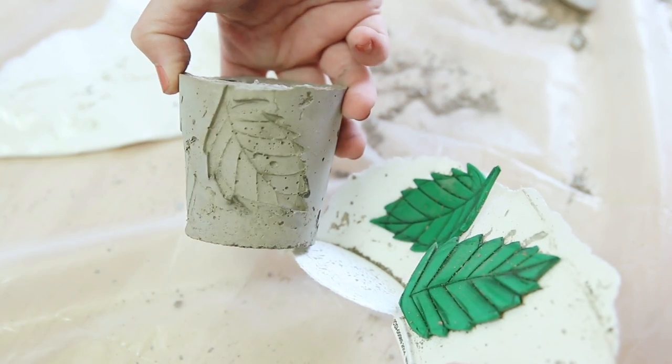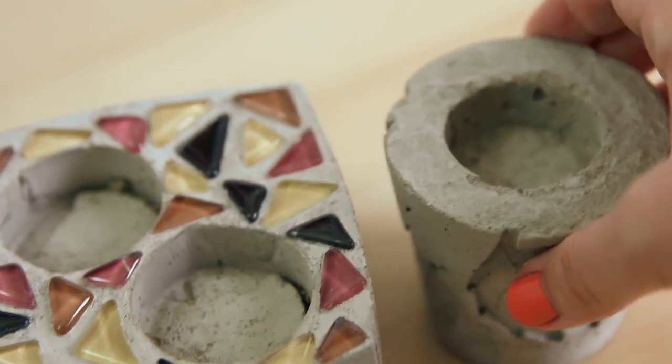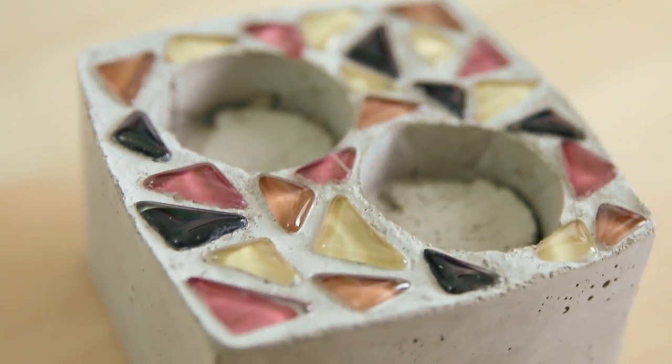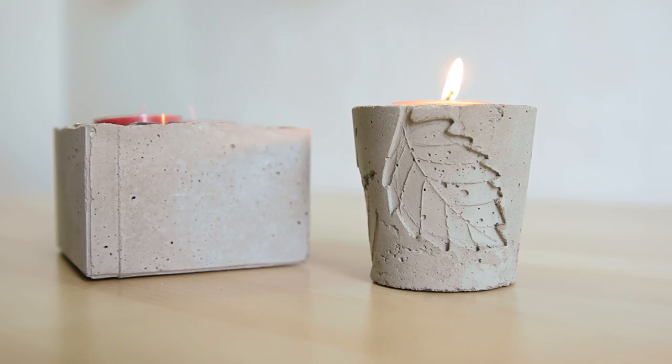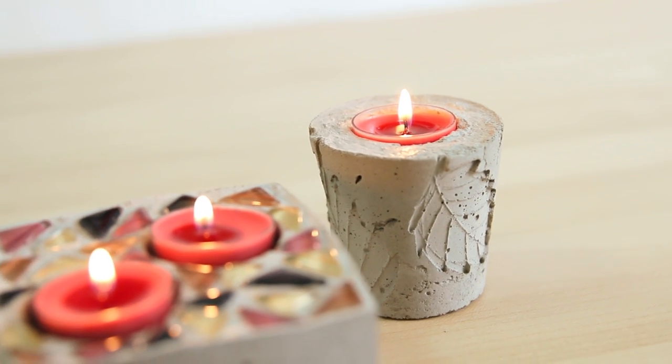In this tutorial, I'll show you how to make some fall inspired cement candle holders. These are perfect for holding tea lights or you can include a larger candle if you prefer or you can use a larger mold to customize it to hold multiple tea lights. Okay, let's get into it.